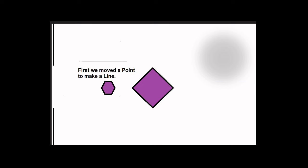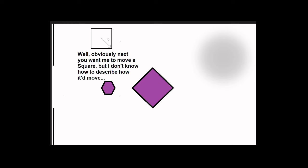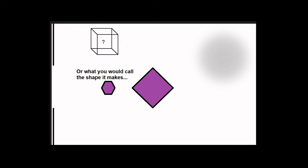First, we move a point to make a line. Yes. Then we move that line to make a square. Yes. Well, obviously next you want me to move a square, but I don't know how to describe how it moves, or what you would call the shape it makes.